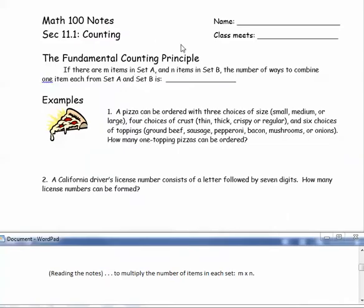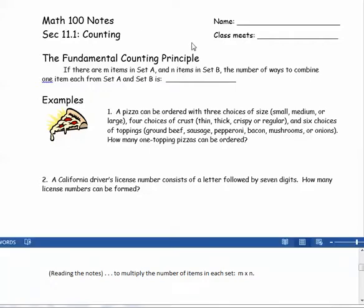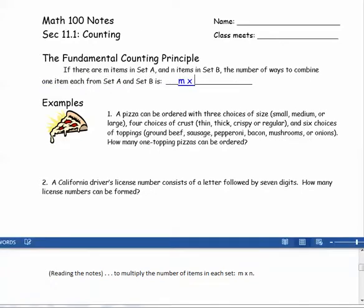So if we have two sets with a certain number of items in each, M in set A and N in set B, the number of ways to combine one item each from set A and set B is found by multiplying: M times N.